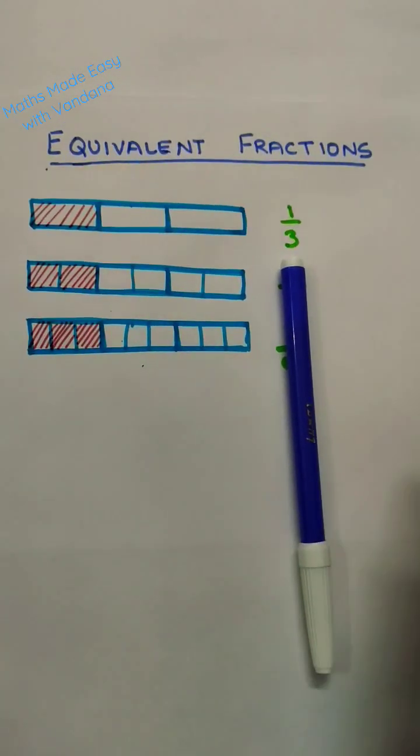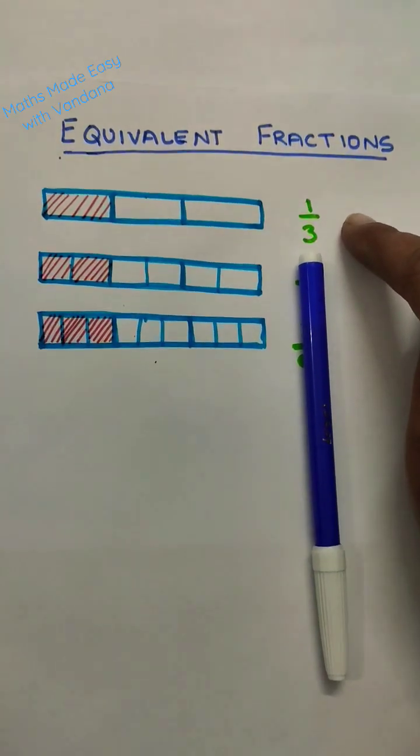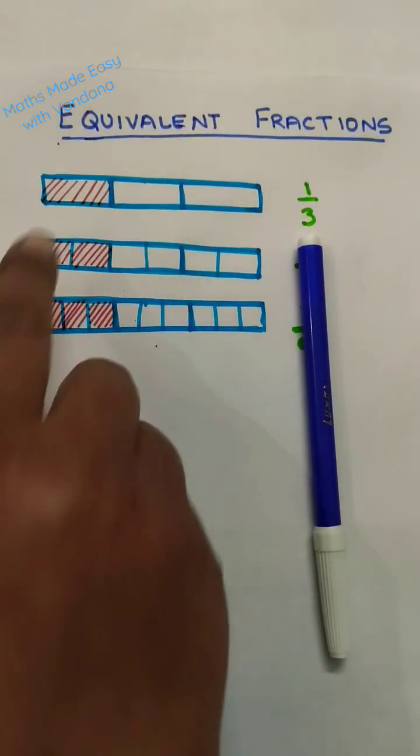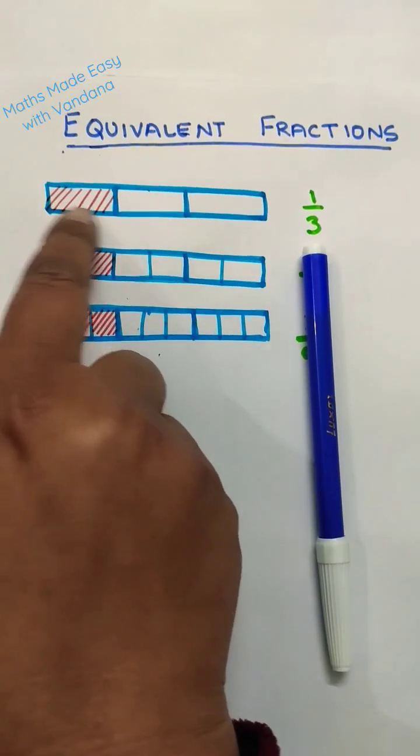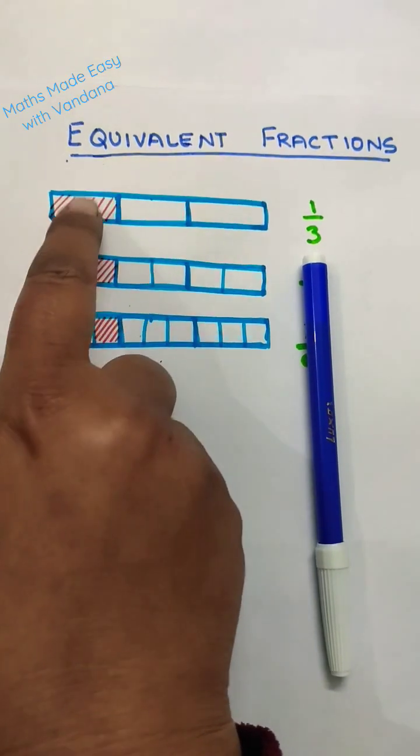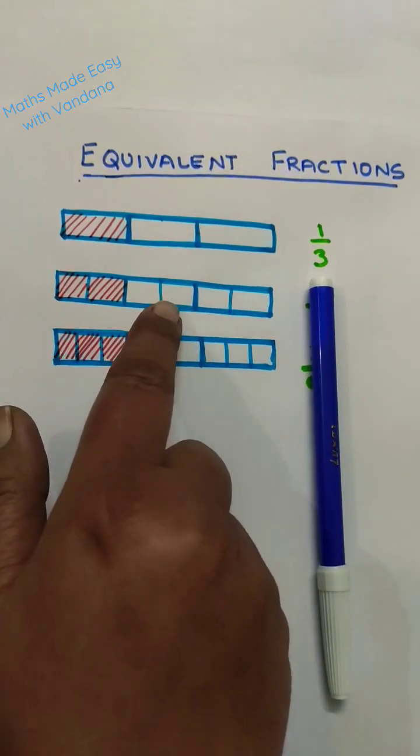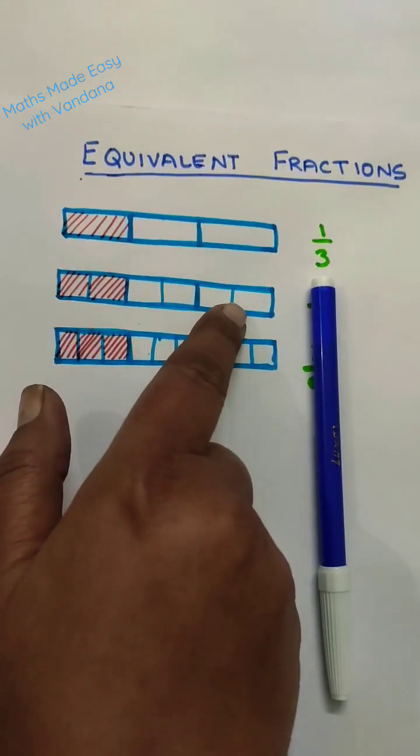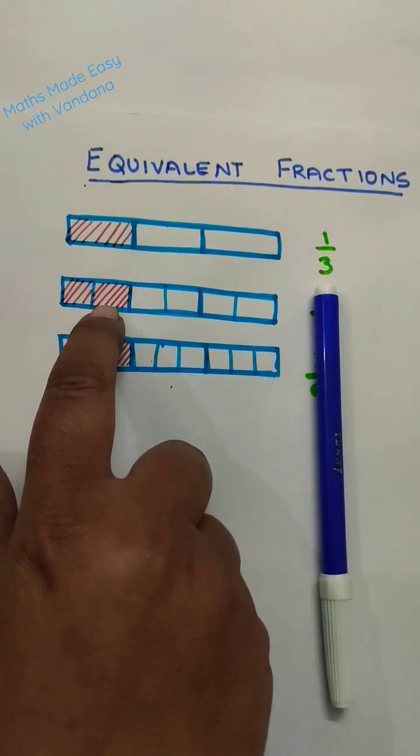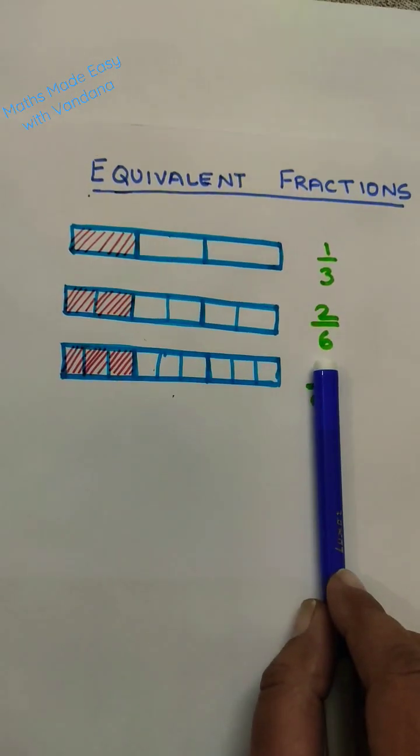Now if I have to make an equivalent fraction of one by three, what I did is I divided each part into two equal parts. So now the fraction becomes two by six.